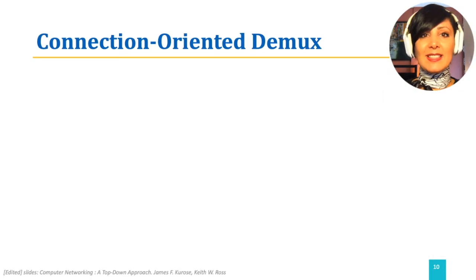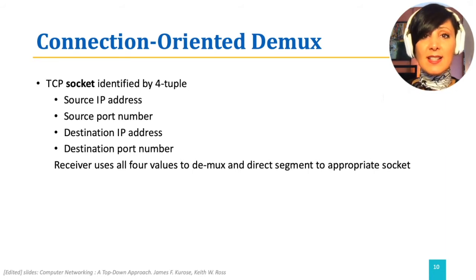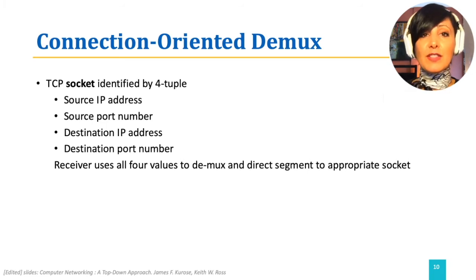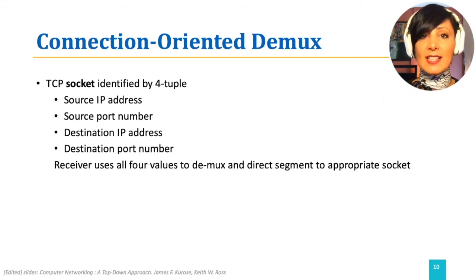In connection-oriented demultiplexing, there is an end-to-end connection in place, like a pipe. This logical connection is between the destination and source processes, and therefore information about both the source and destination processes are needed to ensure segments belong to the same connection. Therefore, in connection-oriented demultiplexing, as in TCP, the socket is identified by a four-tuple.